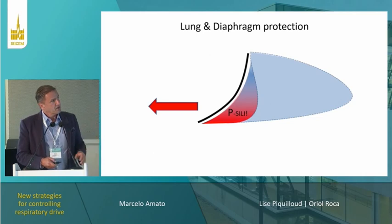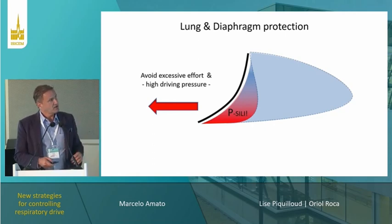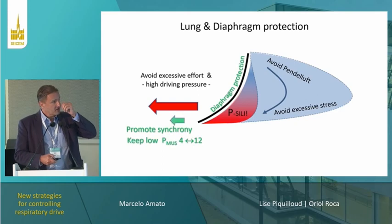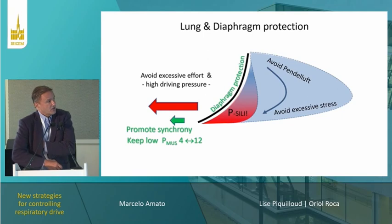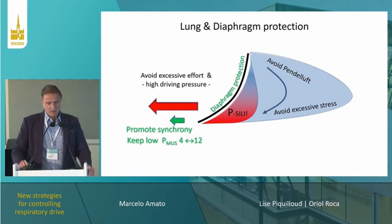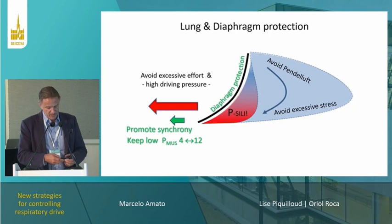We have been discussing the ideal concept of lung and diaphragmatic protection. We are starting to have some references for the right amount of effort to avoid atrophy and at the same time avoid inflammation of the diaphragm and ventilator-induced lung injury. And it's quite surprising that the same thresholds for ventilator-induced lung injury also work for the diaphragm.